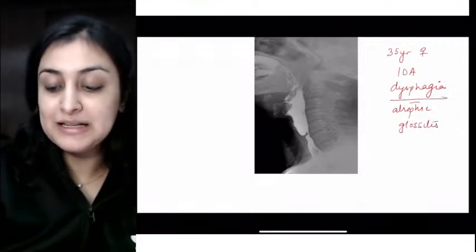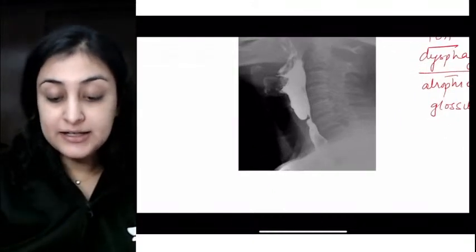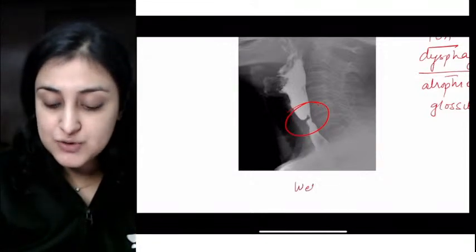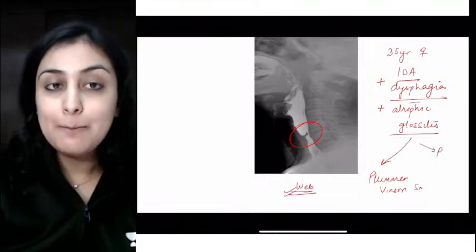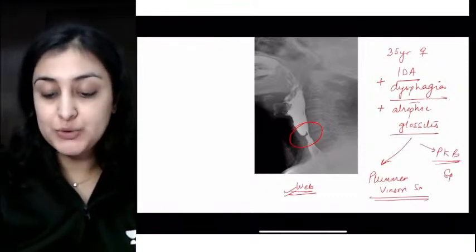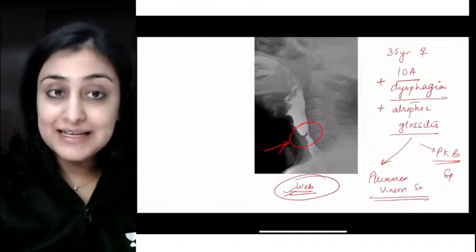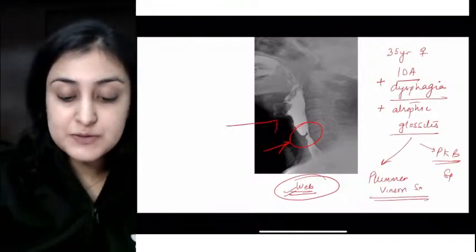What is this barium swallow appearance? A 35-year-old female with iron deficiency anemia comes with dysphagia and atrophic glossitis. The dysphagia is because of this shelf-like narrowing, which is esophageal web - like a mucosal shelf obstructing, leading to dysphagia. When I combine it with a triad of iron deficiency anemia and atrophic glossitis, this is Plummer-Vinson syndrome or Paterson-Kelly-Brown syndrome. Esophageal web, very common in cervical esophagus. Is this premalignant? Yes, it predisposes to squamous cell CA.